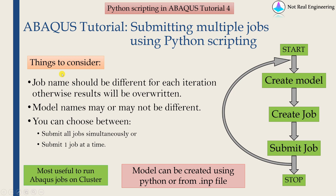Some things to consider: the job name should be different for each iteration, otherwise the results will get overwritten. So whenever you create a job, the name of the job should change. The name of the model may or may not change — if you want to keep all the models to later visualize in the GUI, you can keep the model names different. Otherwise, you can keep the name the same and let it be overwritten, but your jobs will be different.